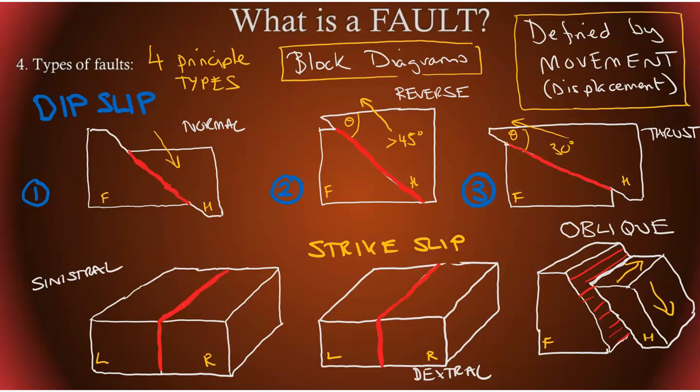Oblique fault is we have not a dip or strike. It's in between, but we have two movements. You have a combination of movements. In this case, in this diagram, looking at the hanging wall is also displaced in a strike slip with a right lateral. And the hanging wall is displaced downwards in a normal fault. So normal plus right lateral, which is oblique. So these are the main types of faults.